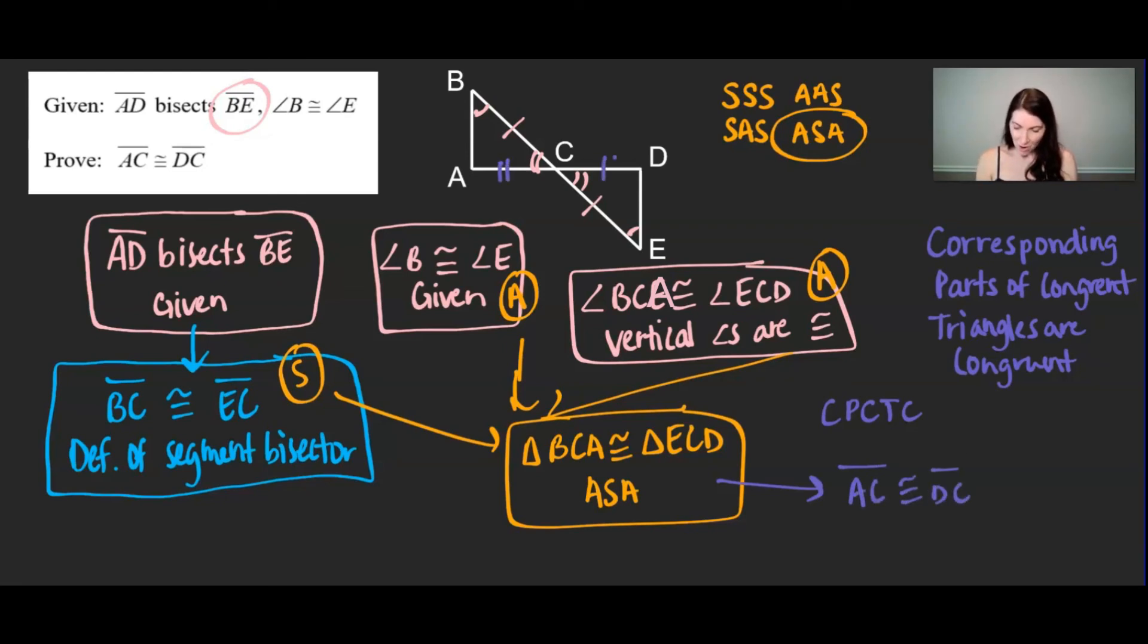All right let's go ahead and mark those because of corresponding parts of congruent triangles are congruent. And that completes our proof.